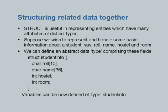For example, hostel numbers in IIT are numerics — 1, 2, 3, 4, 5, 6, etc. Room numbers are numerics. Name is a character string. Roll number is also a character string with up to 9 characters. You would like to specify these components such that they belong to a student.